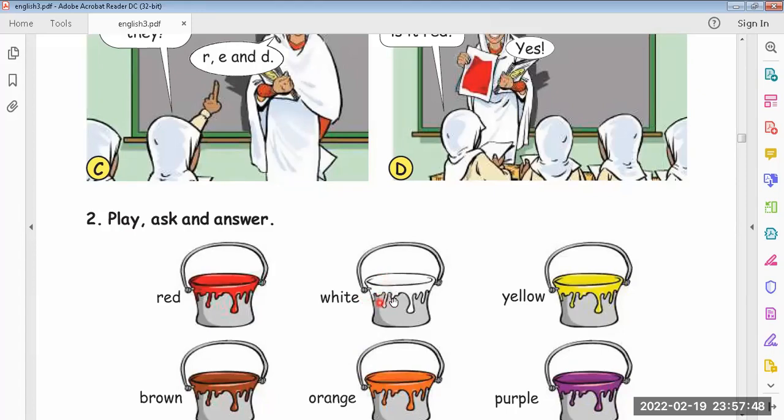How many letters are there? There are 5 letters. What are they? W-H-I-T-E. Is it white? Yes, it is white.